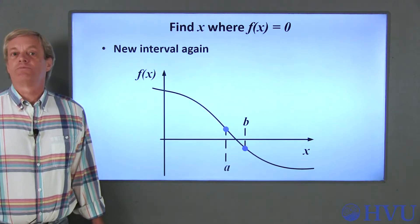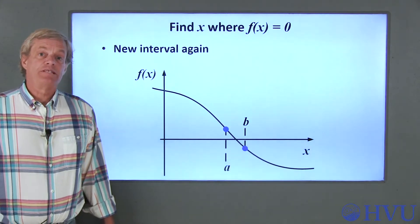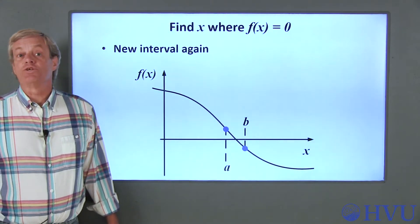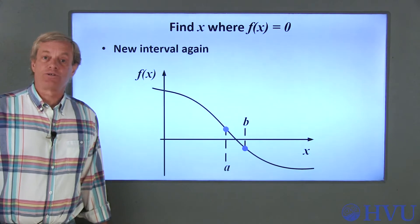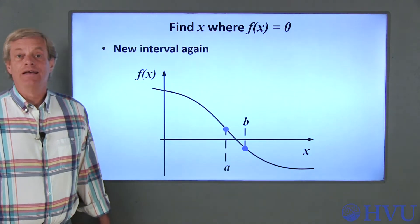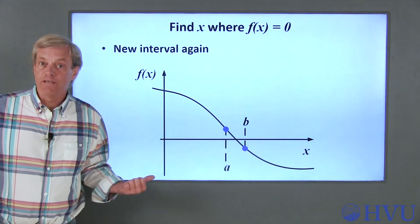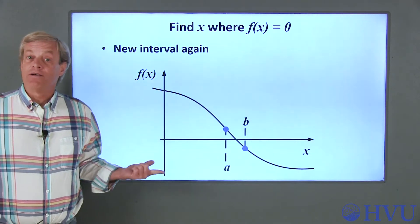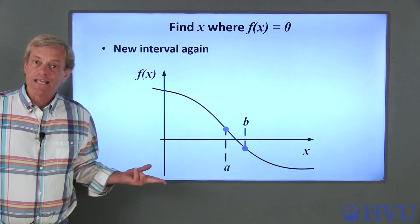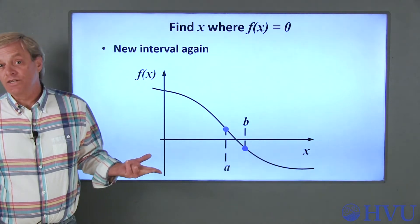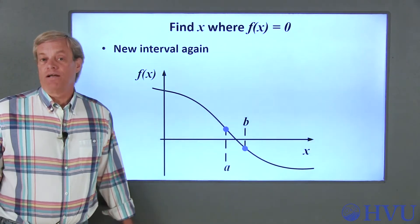The overall idea here is pretty common in numerical analysis: we do a series of simple numerical operations over and over again until we get close enough to an actual solution. In this case, the operations are to find the midpoint of the interval, determine the value of the function at the midpoint, decide which side of the midpoint the sign changes on, redefine the interval, and repeat the process.